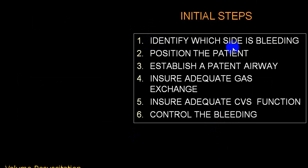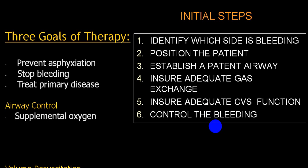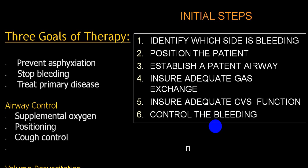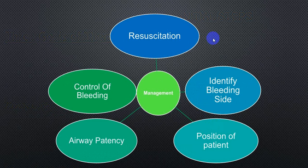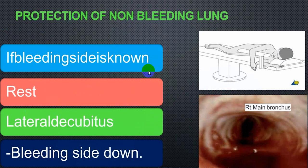Identify the site, ensure proper positioning, confirm airway patency, ensure oxygenation is adequate, and if the person has gone into shock, correct the shock first. Then proceed to control of bleeding. The priorities are: prevention of asphyxia, stop bleeding, and treat the primary cause. Oxygenation should be proper, positioning good, cough control, and endobronchial intubation for control of bleeding and ventilation. Management includes resuscitation, identifying the bleeding site, airway patency, and control of bleeding, with protection of the non-bleeding lung.